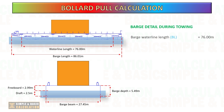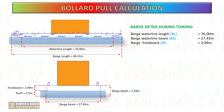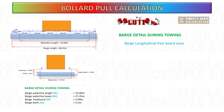For this example, these are the details of the barge during towing: the draft is 2.5 meters and the waterline length is 76 meters. Now let's start to calculate the barge longitudinal and transverse freeboard area.